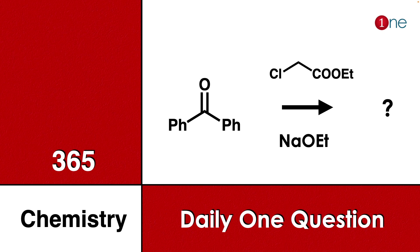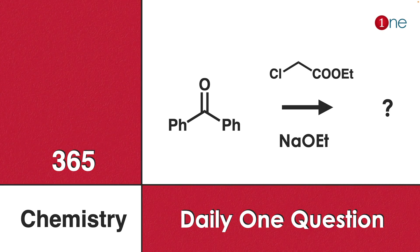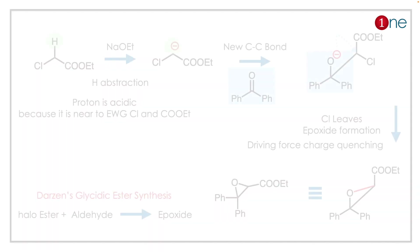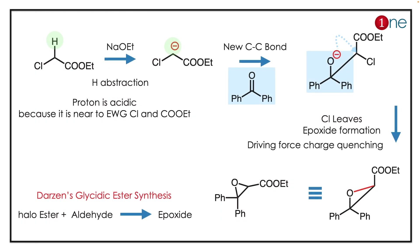Welcome to One Chemistry — this is the 365 Chemistry series, one question daily for you. Here we have benzophenone reacting with a chloroester and a base. You have to guess what the final product will be. The answer lies in the basics and a named reaction.